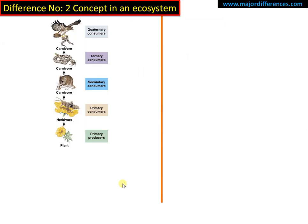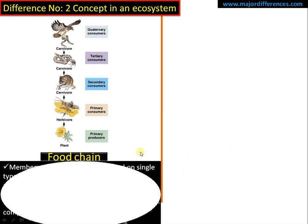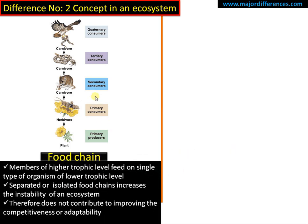Now the importance of these two concepts in an ecosystem: in the case of a food chain, as we discussed, members of a higher trophic level feed on only a single type of organism from the lower trophic level. In this example, this particular eagle feeds only on this snake.